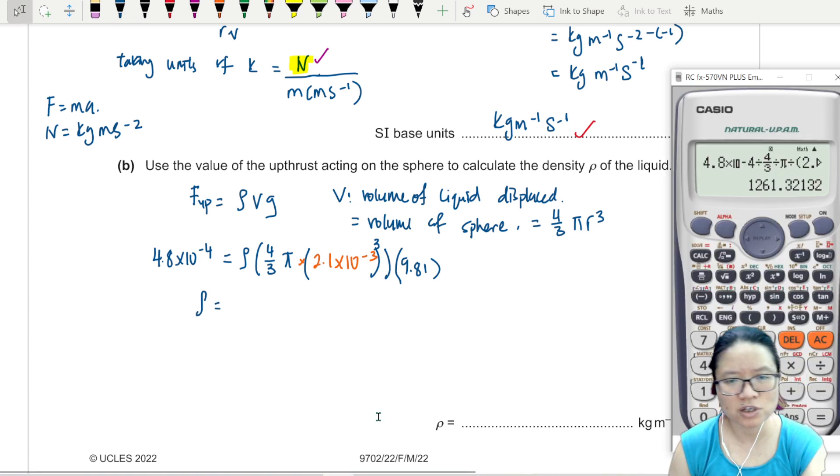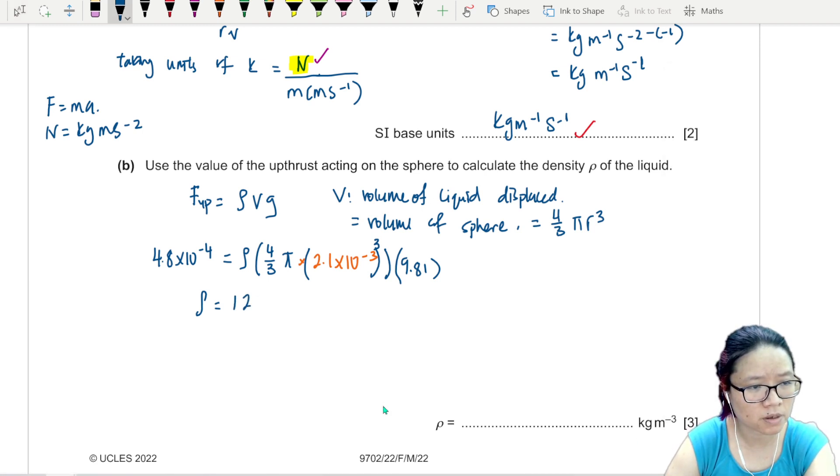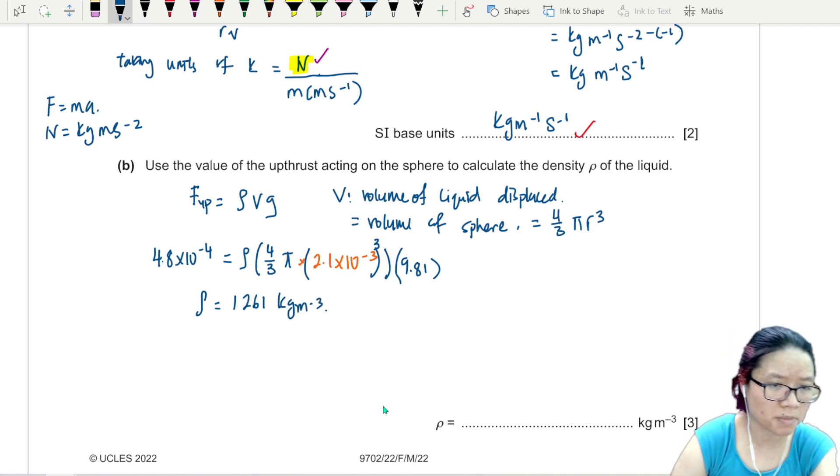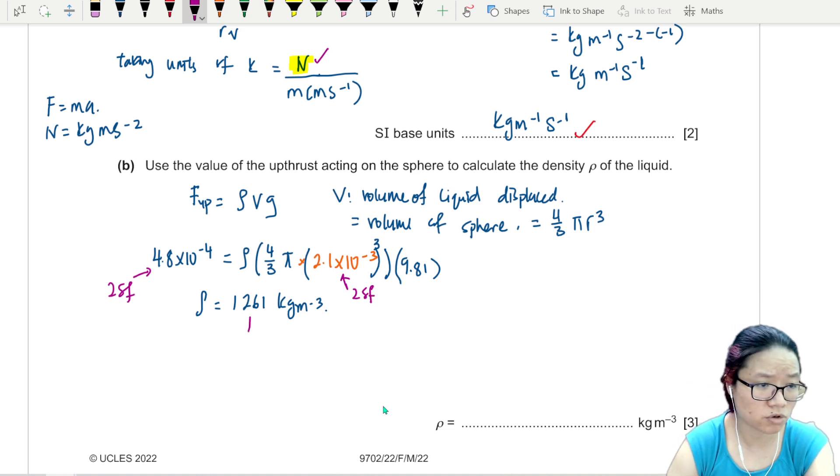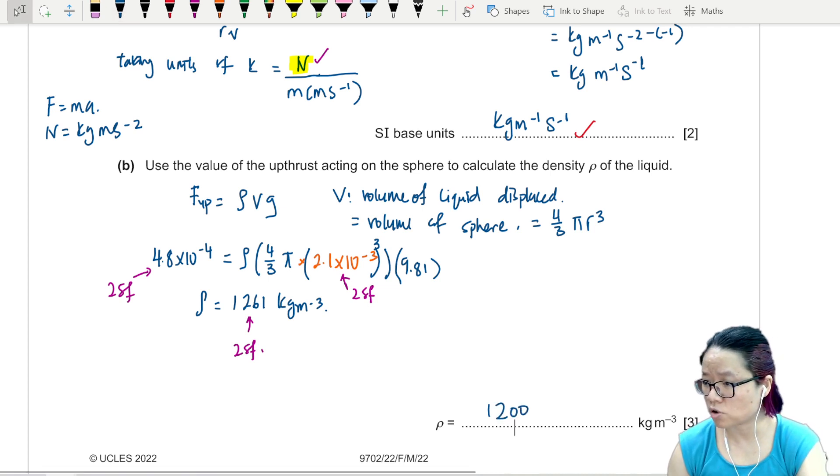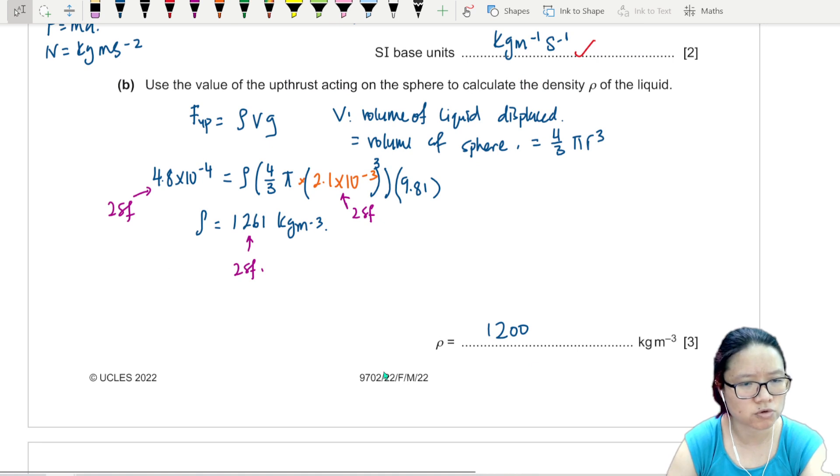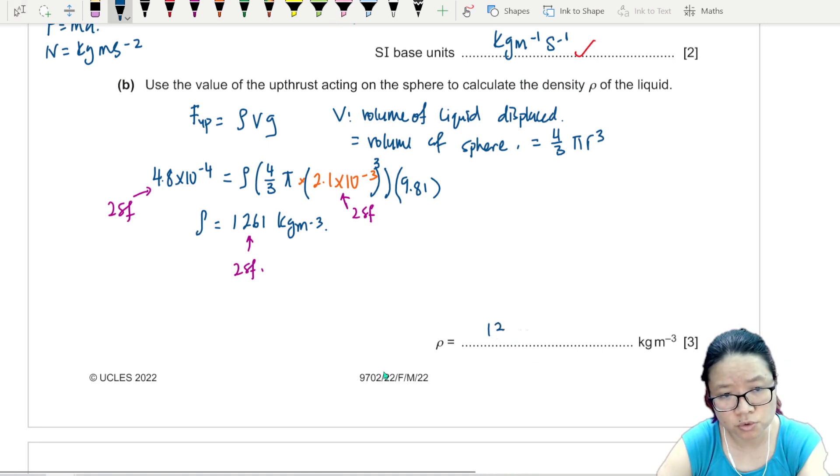The answer is 1261. Using water as a guideline, water density is about 1000, so this is acceptable. Now we are at the issue of how many SF should I write my answer. Question didn't specify, and all the values given is 2SF, so it's perfectly acceptable to write 1300 or 1200. Rounding this is 1300, 2SF.